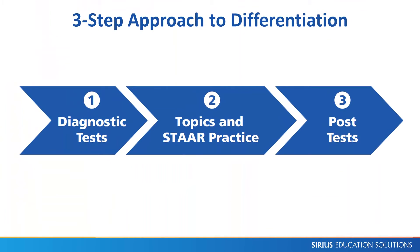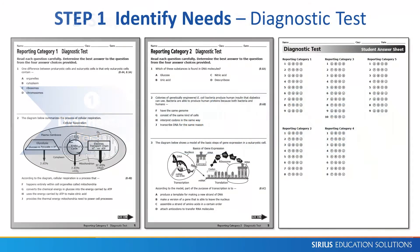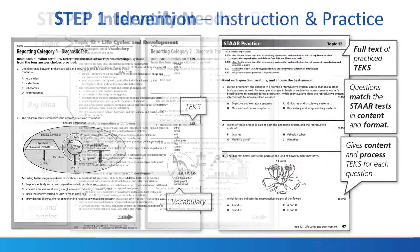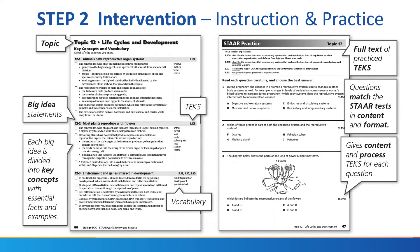The workbook provides an optional three-step approach to differentiate instruction and practice for mixed-ability classrooms. Step 1 is to identify individual student needs using the five diagnostic tests that correspond with the five reporting categories. Answer sheets are provided so students can practice with testing conditions.